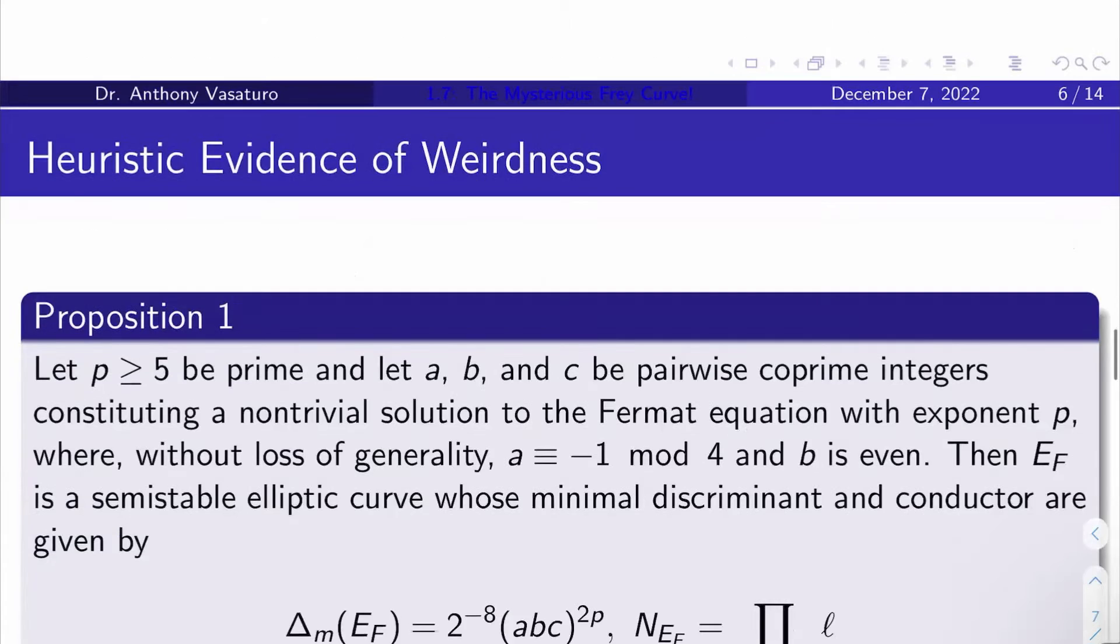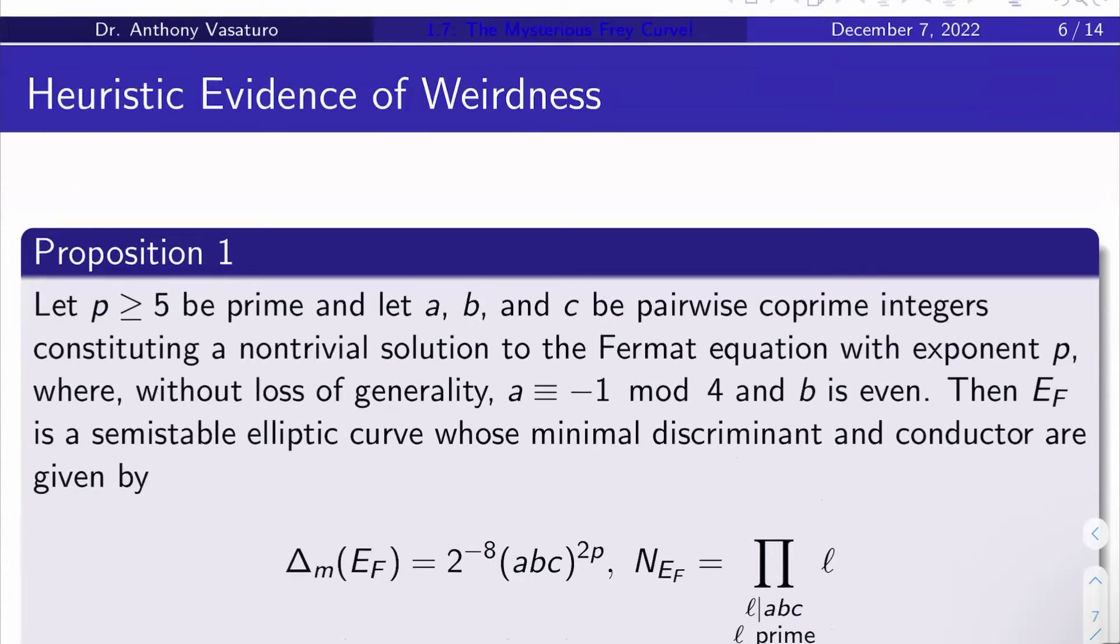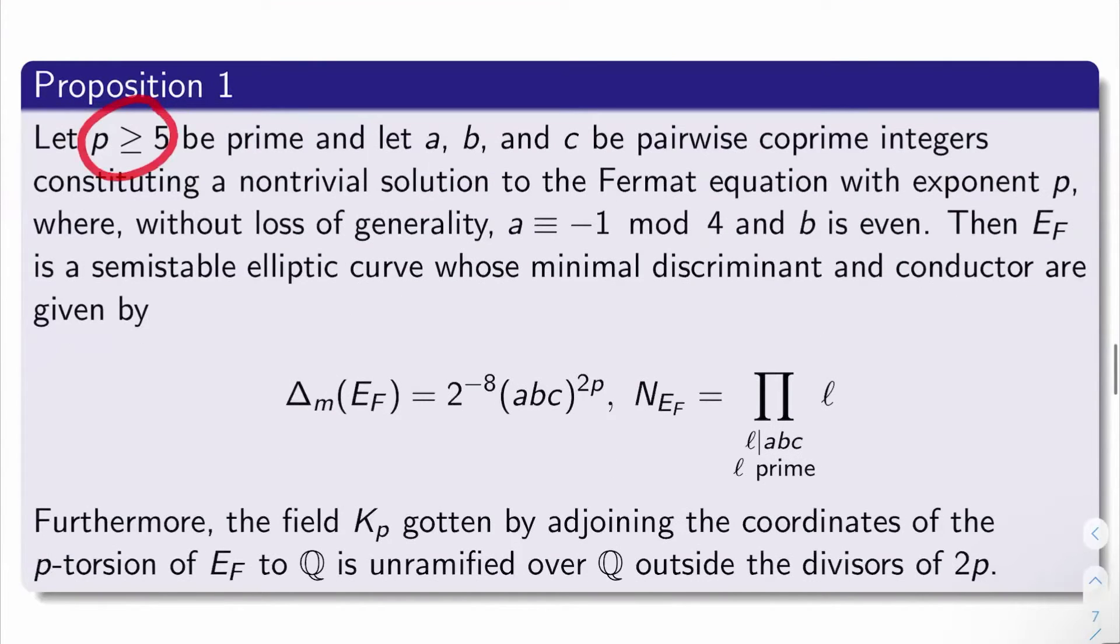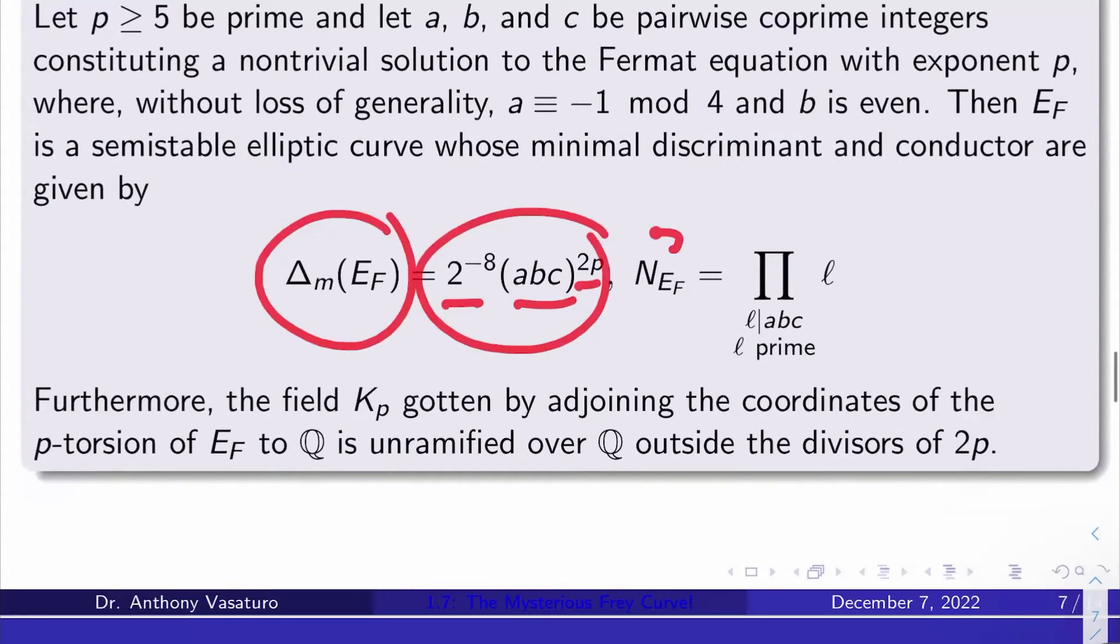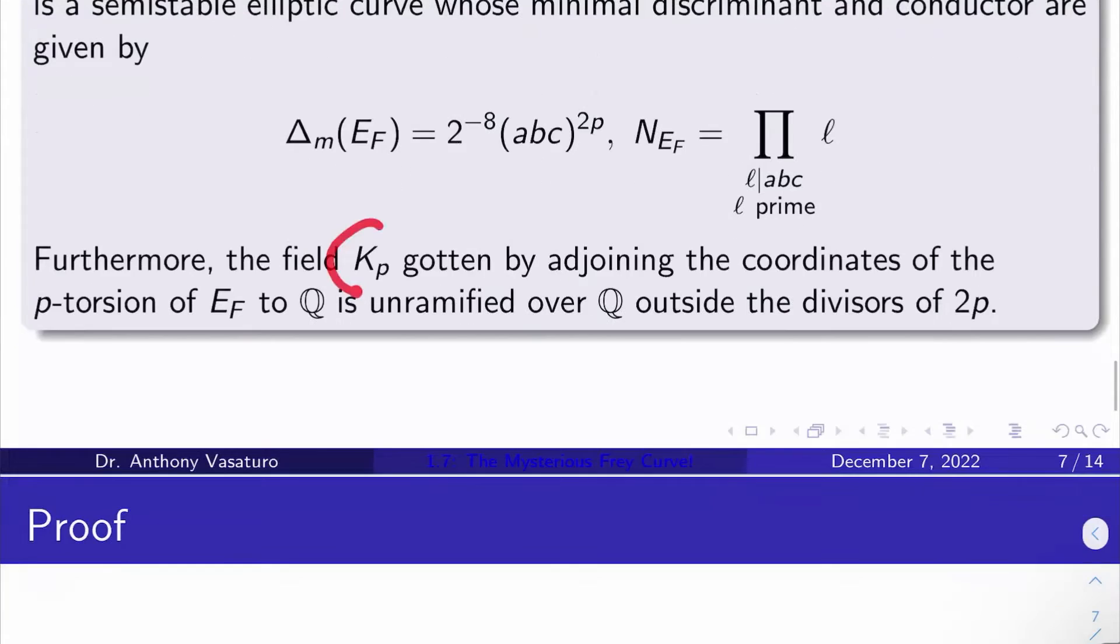Here's the key crucial proposition of the video. Heuristic evidence of the weirdness of the Frey curve. Proposition 1. Let p be prime at least 5. Let a, b, and c be pairwise co-prime integers constituting a non-trivial solution to the Fermat equation with exponent p, where without loss of generality a is -1 mod 4 and b is even. Then E_F is a semi-stable elliptic curve, so it has everywhere good or multiplicative reduction, whose minimal discriminant, global minimal discriminant, and conductor are given by Δ_m(E_F) = 2^(-8)(abc)^(2p), that we already proved. And the conductor of E_F is the product over all primes that divide abc. Furthermore, the field K_p gotten by adjoining the coordinates of the p-torsion of the Frey curve to Q is unramified over Q outside 2p. So there's very little ramification actually.